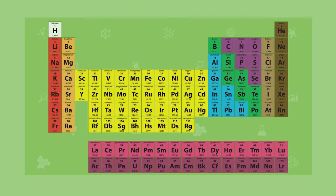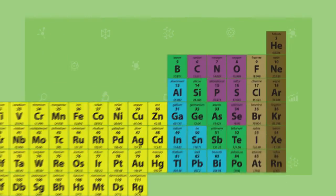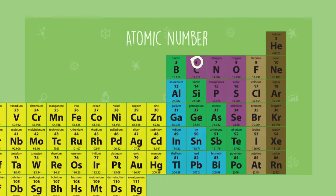You'll notice that each box on the periodic table is numbered at the top. This number represents the number of protons in that element, and it's called the atomic number.